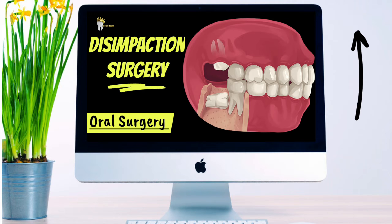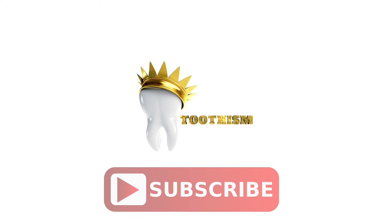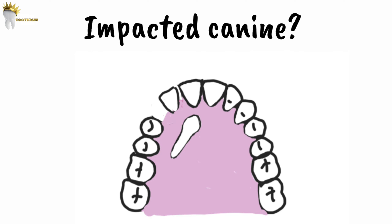A canine is considered as being impacted if it doesn't erupt even after complete root development, or if the contralateral tooth is erupted for at least six months with complete root formation.